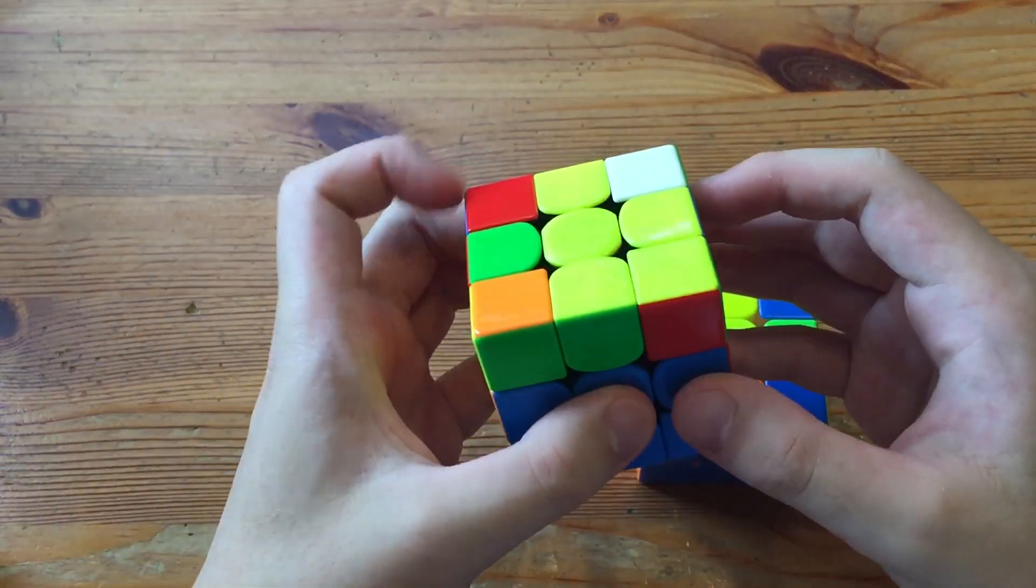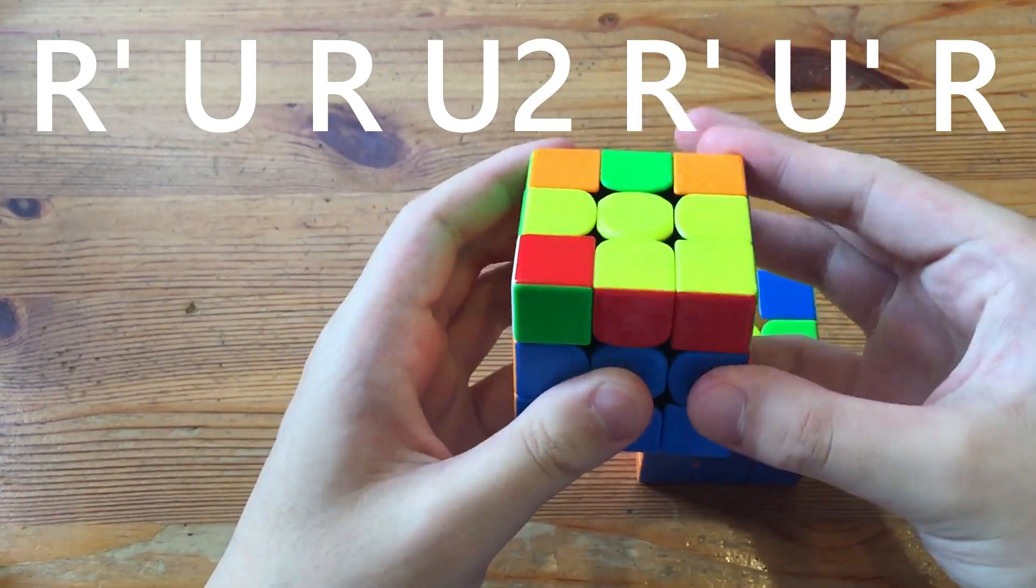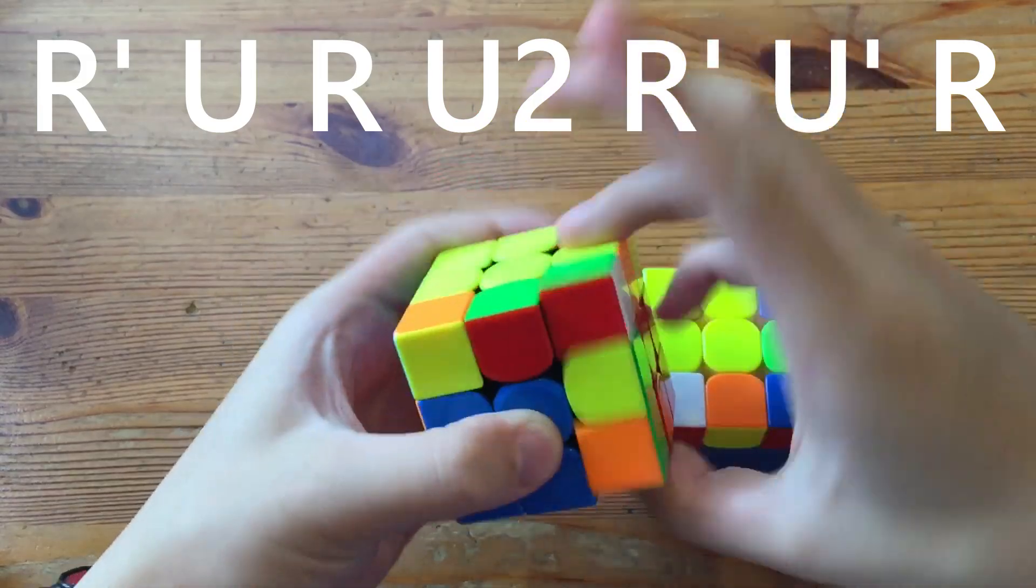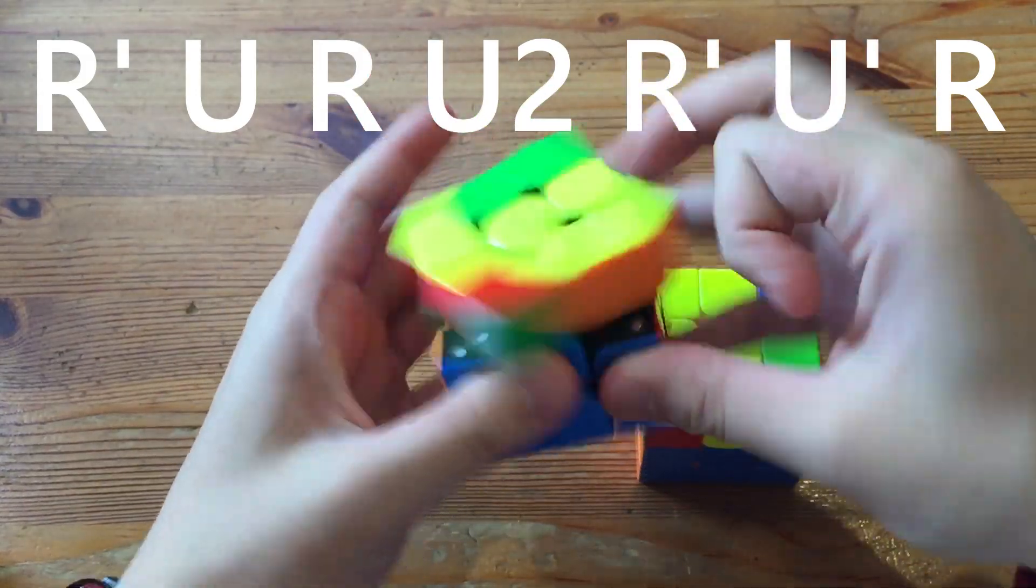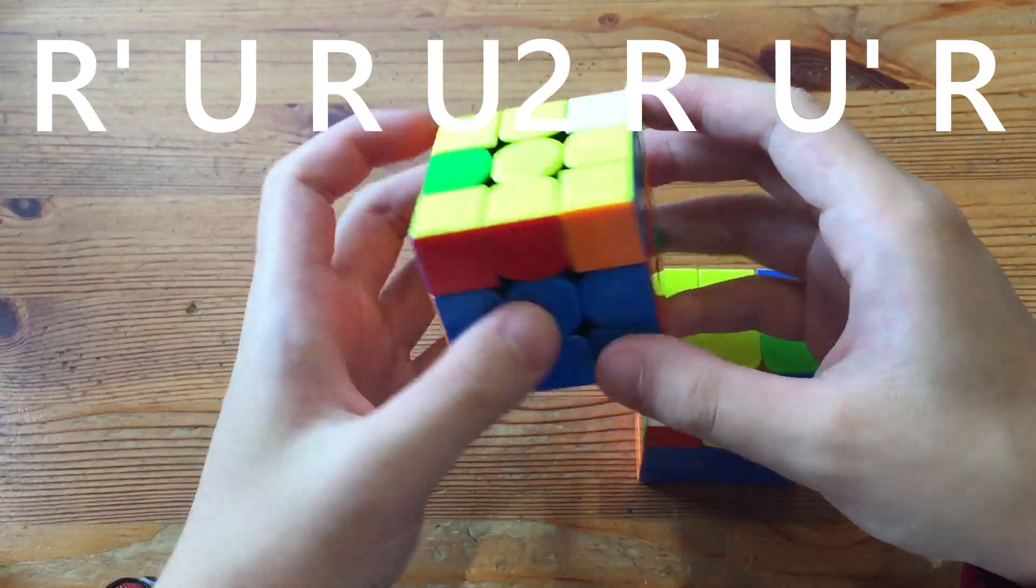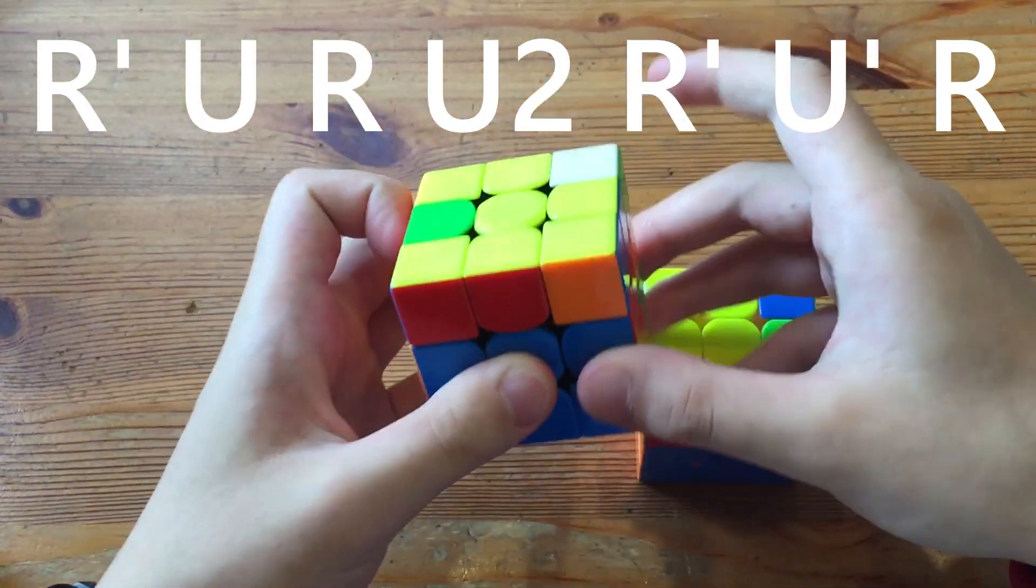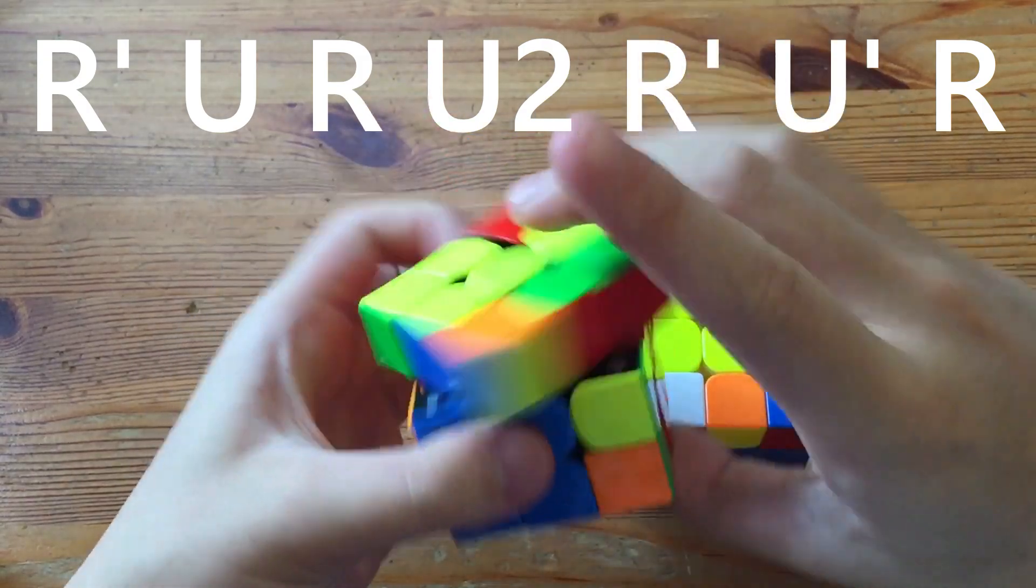And this is an AUF trick from this angle so you do R' U R and then insert the pair. And it actually solves a pretty easy OLS so all the pieces are oriented, and just doing that will give you an OLS skip. So that's another reason why this is useful.